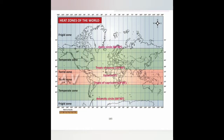The torrid zone, located between the Tropic of Cancer and Tropic of Capricorn in the middle, receives maximum heat from the sun and is very hot most of the time. The temperate zone lies between the Tropic of Cancer and the Arctic Circle in the Northern Hemisphere, and between the Tropic of Capricorn and the Antarctic Circle in the Southern Hemisphere. This zone receives slanting rays, so temperature decreases towards the poles and is moderate.